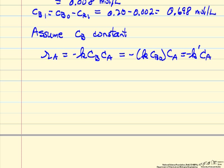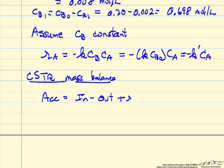So now we're ready to do mass balance on a CSTR. We're going to use the mass balance on the CSTR to get information about the rate constant. Steady state mass balance where accumulation is in minus out plus reaction.